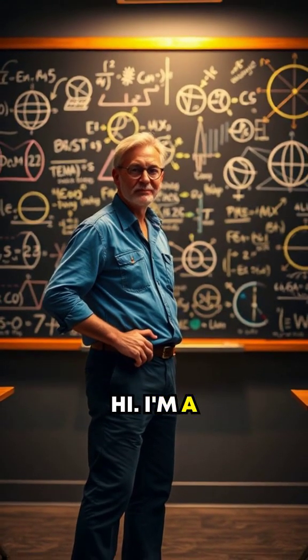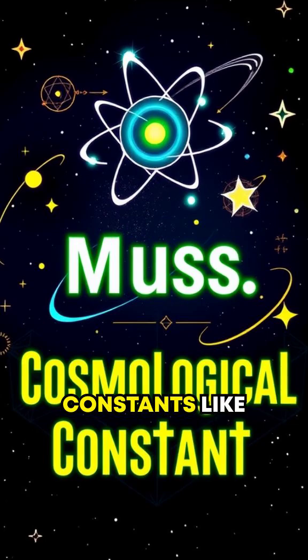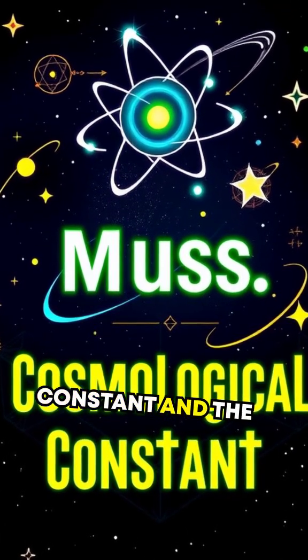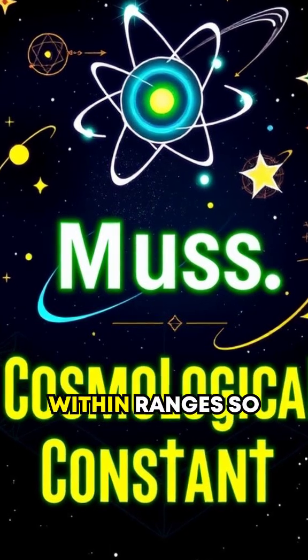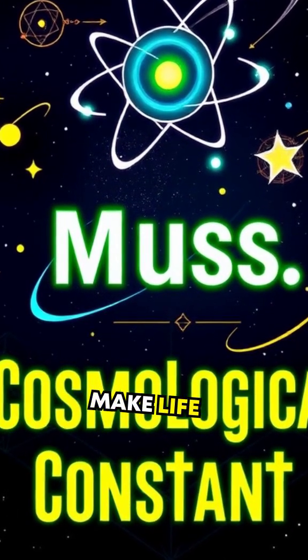Hi, I'm a physicist. Our current equations show constants like the cosmological constant and the mass of an electron are set within ranges so precise, variants would make life impossible.